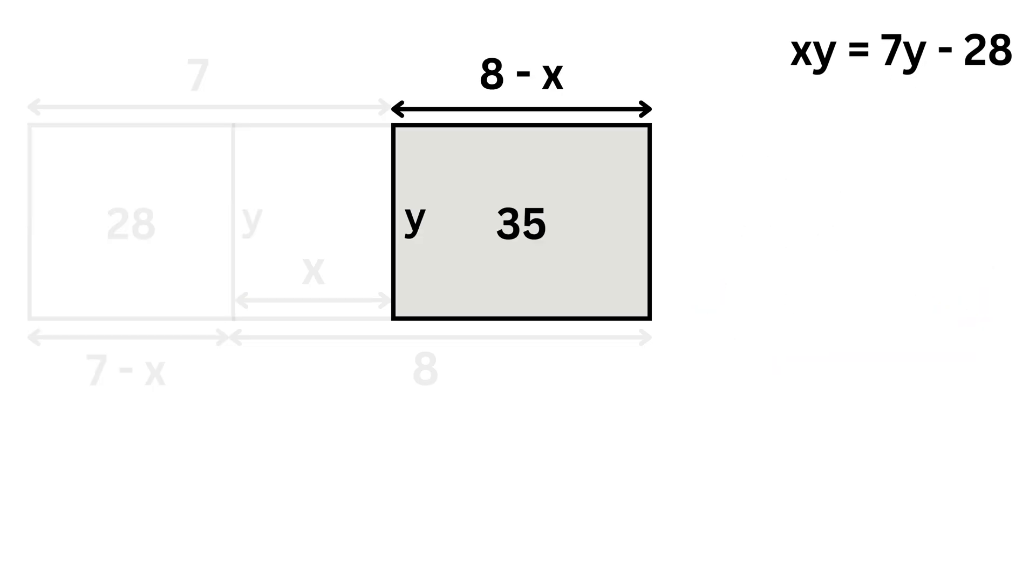Next, let's focus on the right rectangle, whose area is given as 35 square units. Again, using the same formula, we get 35 equals 8 minus x times y. On expanding, we get 35 equals 8y minus xy.